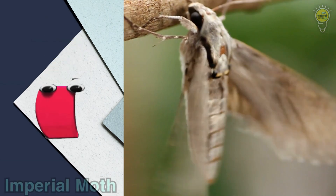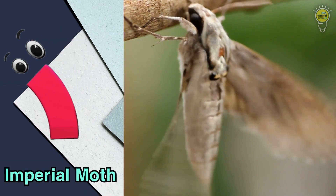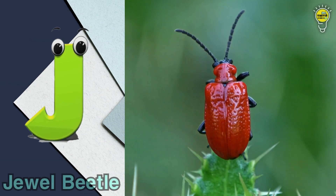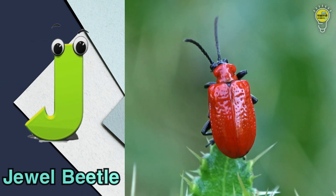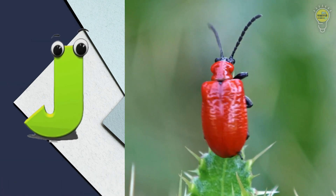I is for imperial moth, i, i, imperial moth. J is for jewel beetle, j, j, jewel beetle.